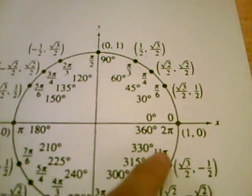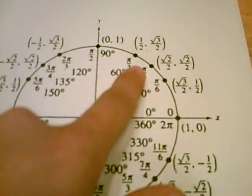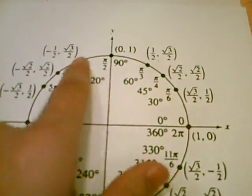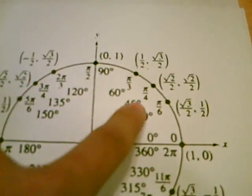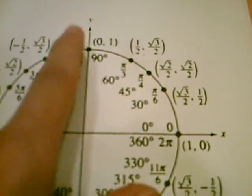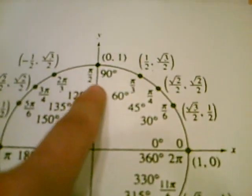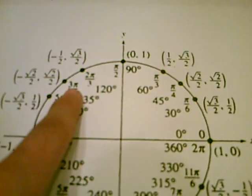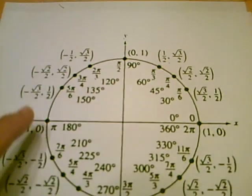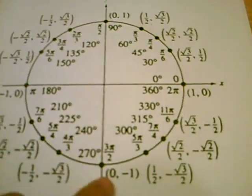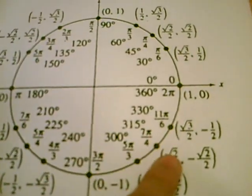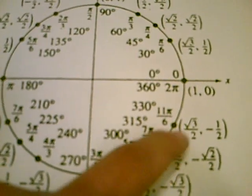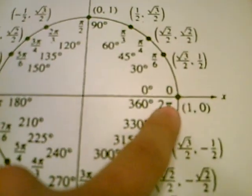Notice how I didn't include pi over 4, because that's a different sequence to follow. Here's pi over 4, and then another pi over 4, right here. 2 pi over 4, reduced to pi over 2. 3 pi over 4, 4 pi over 4, 5 pi over 4, 6 pi over 4, 7 pi over 4, 8 pi over 4, which is 2 pi.